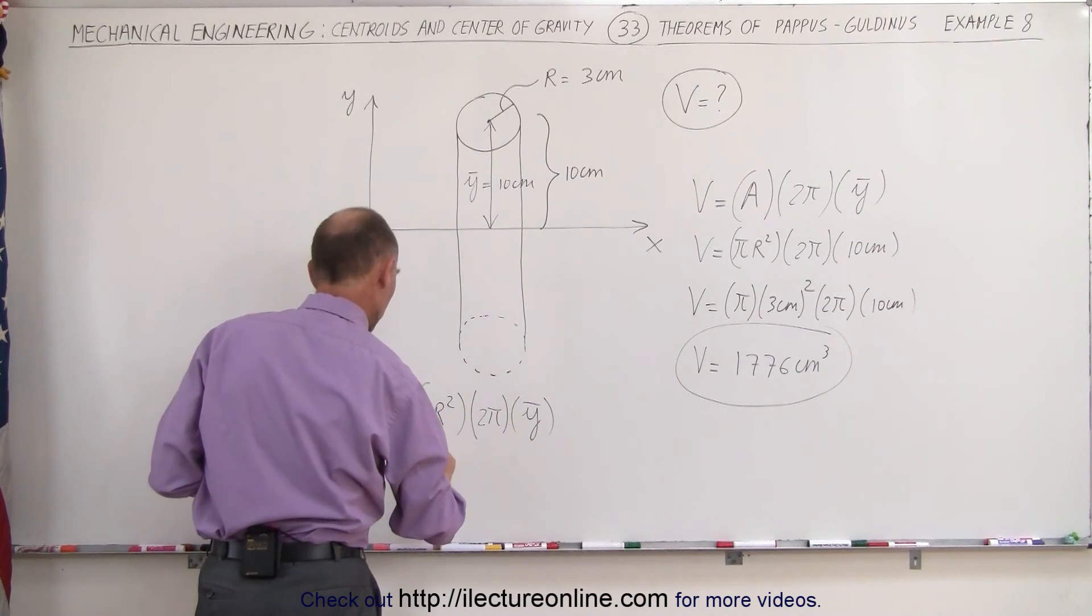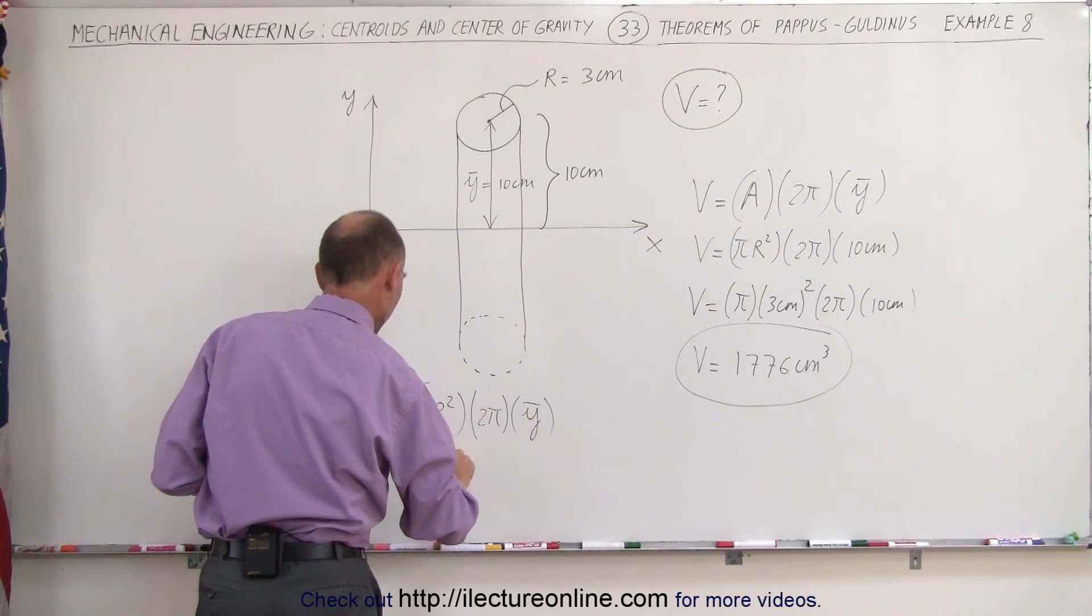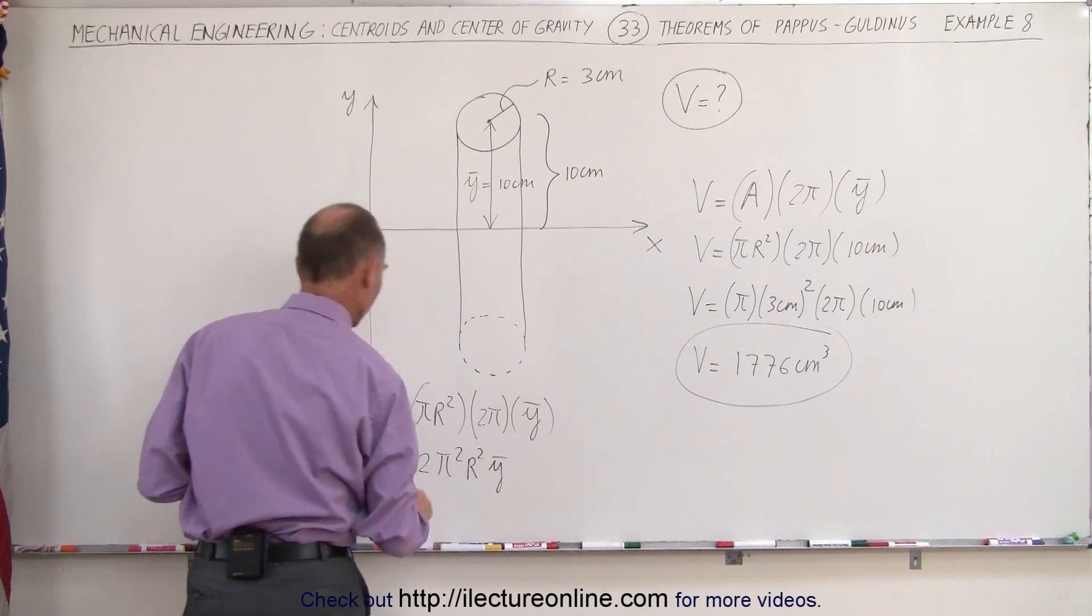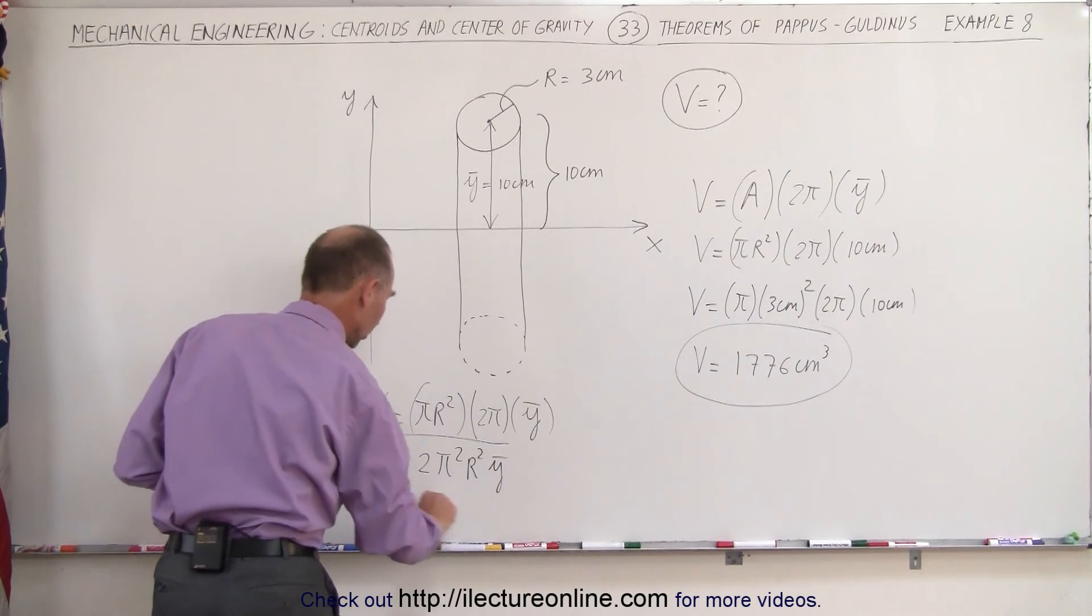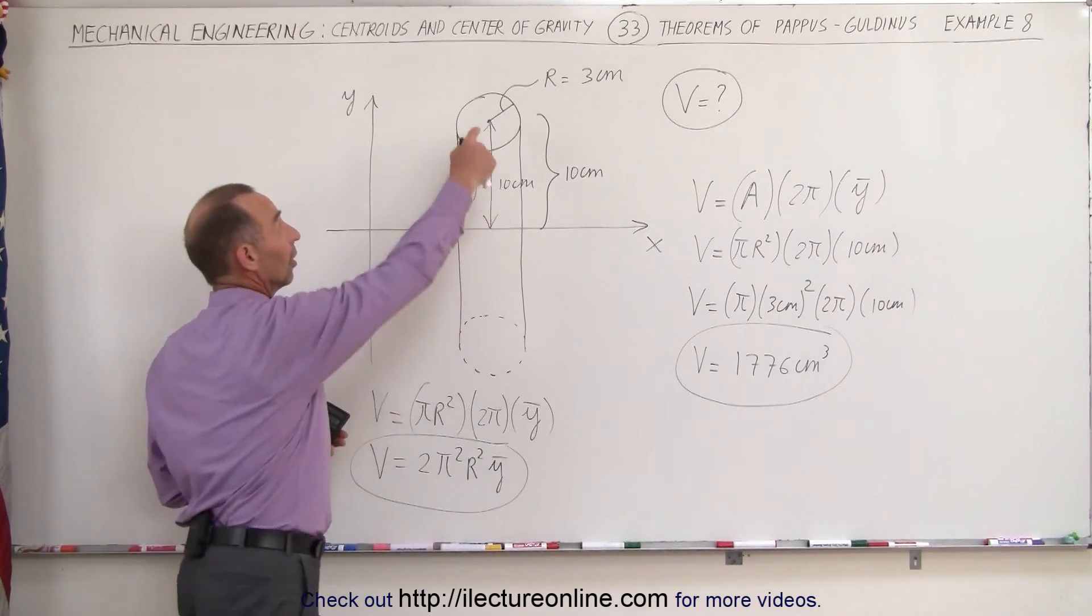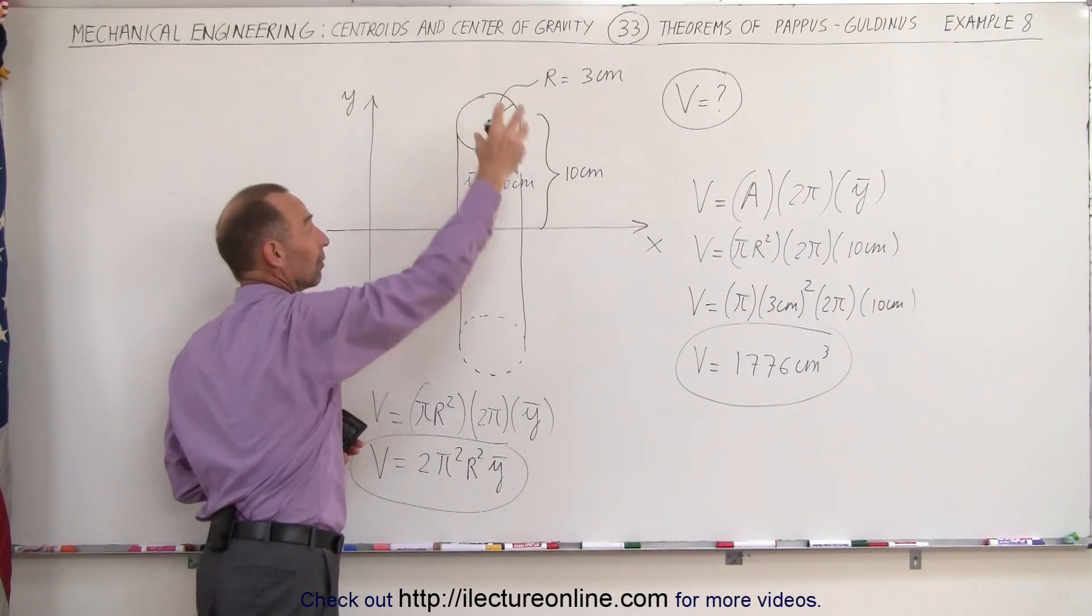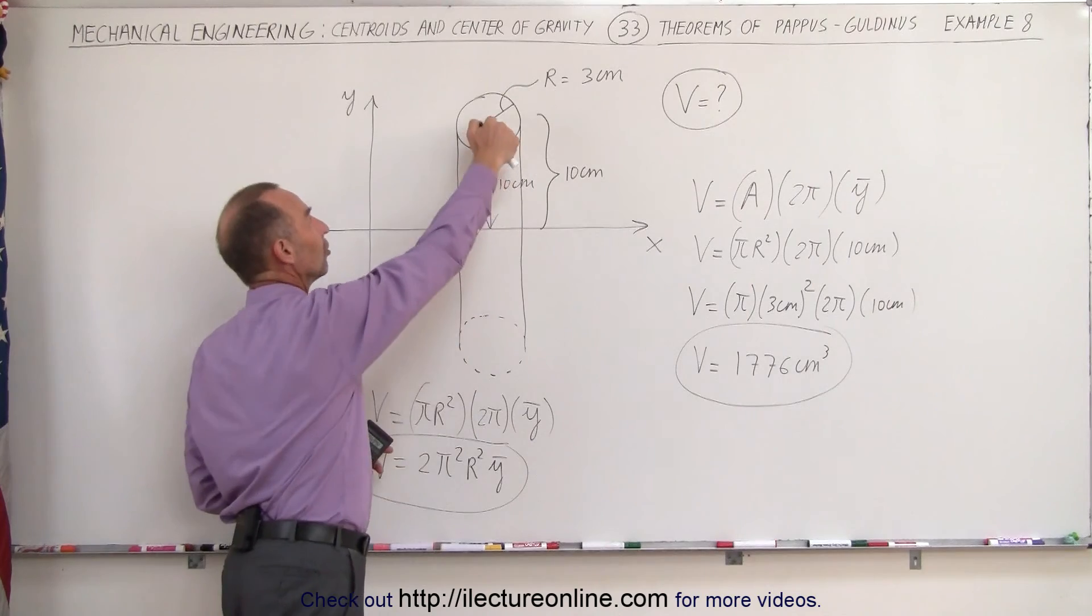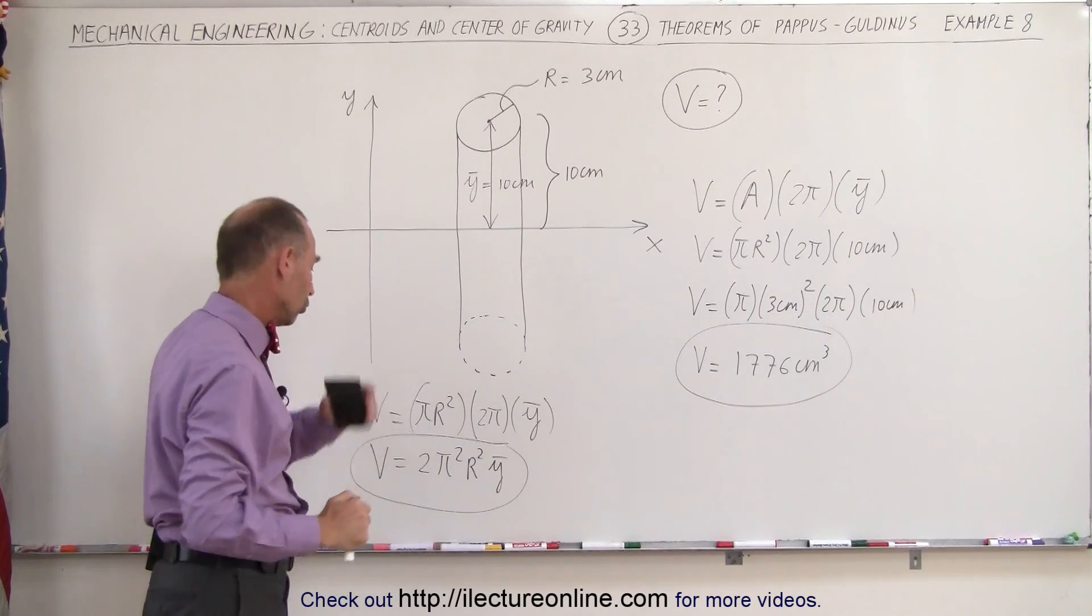This is now equal to 2π²r² times the distance to the centroid from the axis of rotation. So that would be the general formula, or the general equation, r being the radius of the area that we're revolving around the x axis, ȳ is the distance from the x axis to the centroid, and then of course 2π squared, everyone knows what that is.